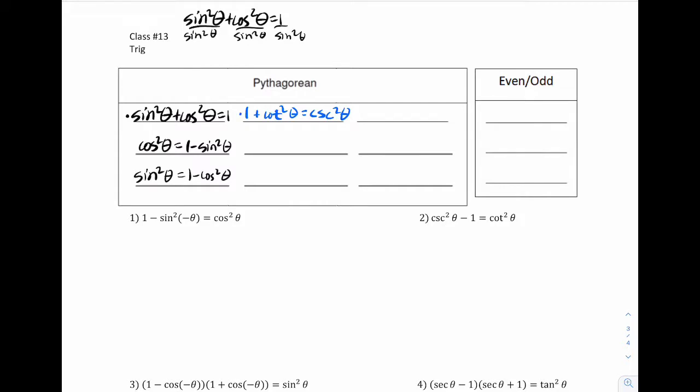And if I follow that same idea, I can manipulate this. I can say that would imply that cotangent squared is equal to cosecant squared minus 1. That also means that 1 is equal to cosecant squared theta minus cotangent squared theta.